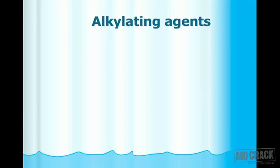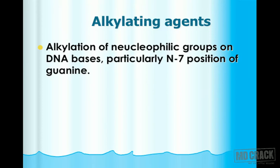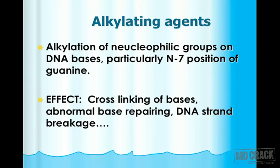Starting with alkylating agents: they are called alkylating agents because they produce alkylation of the nucleophilic groups on DNA bases. The most commonly affected site is the N7 position of guanine. When this group gets alkylated, the effect is cross-linking of bases, abnormal repairing of bases, and finally breakage of the DNA strand.